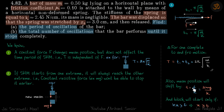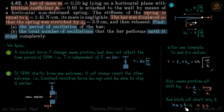Here the constant force is f, so the mean position shifts by t where f equals kt, giving t equals f/k equals μmg/k from the natural length position of the spring. The block will start moving only if the spring force kx is greater than the frictional force f, meaning the extension x must be greater than t.